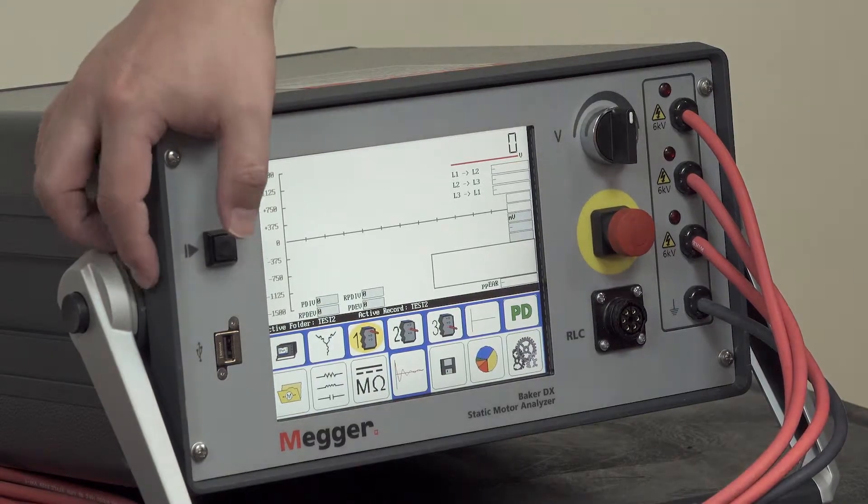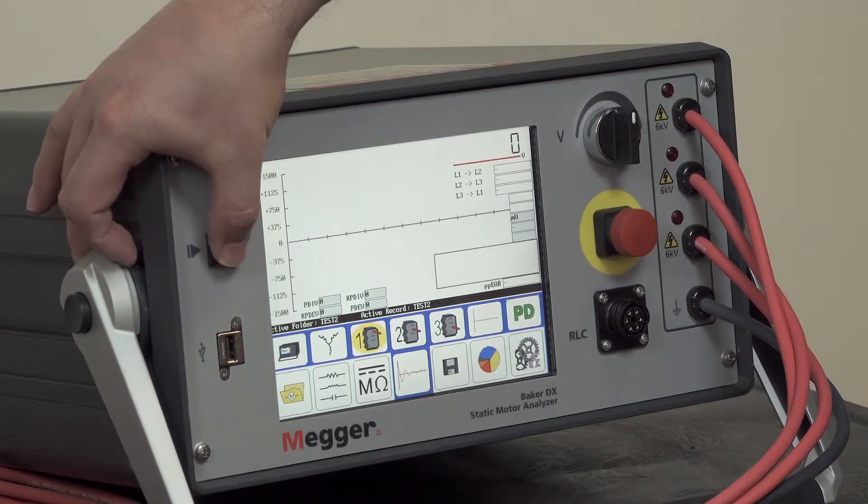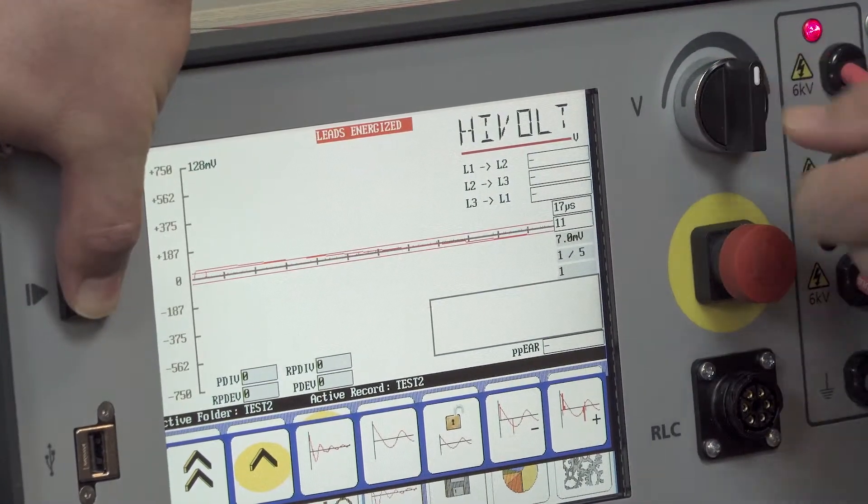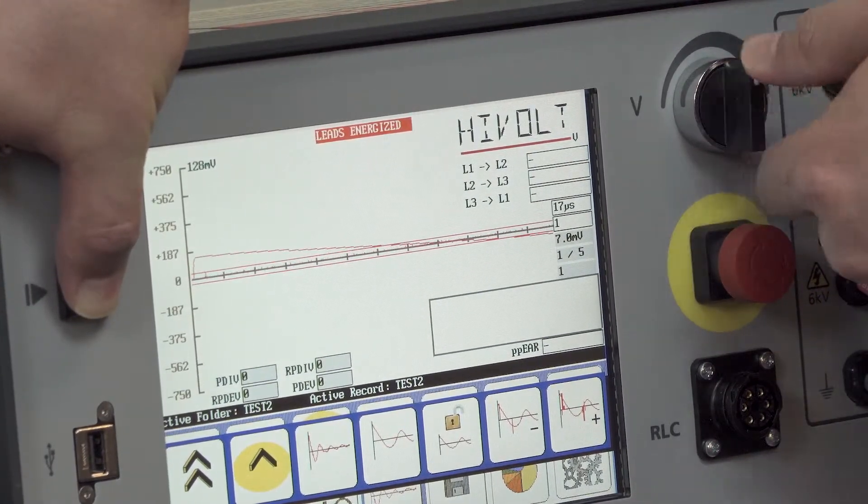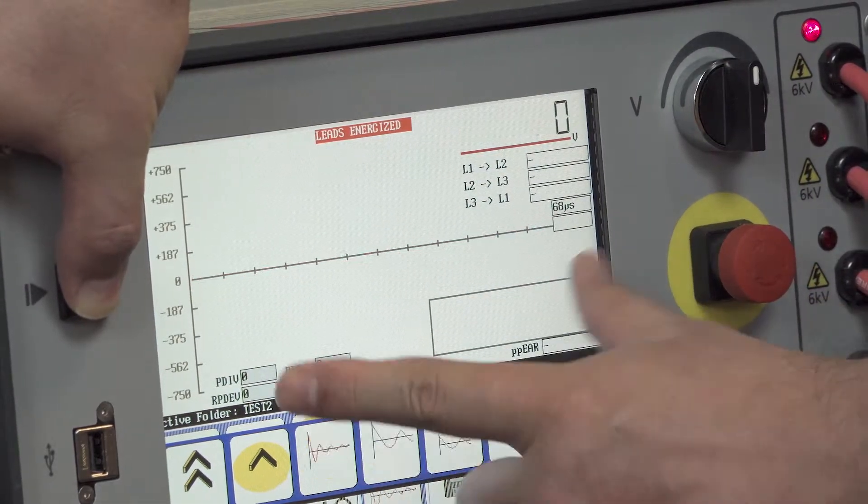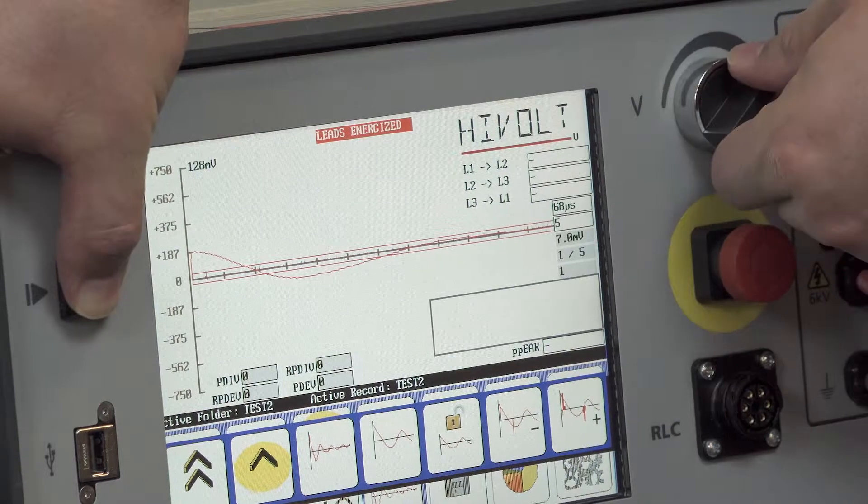And to commence the surge test, we simply press and hold the push to test button, ramping using the voltage control knob to the desired test voltage, ensuring that we scale the waveform to take up a good portion of the screen.